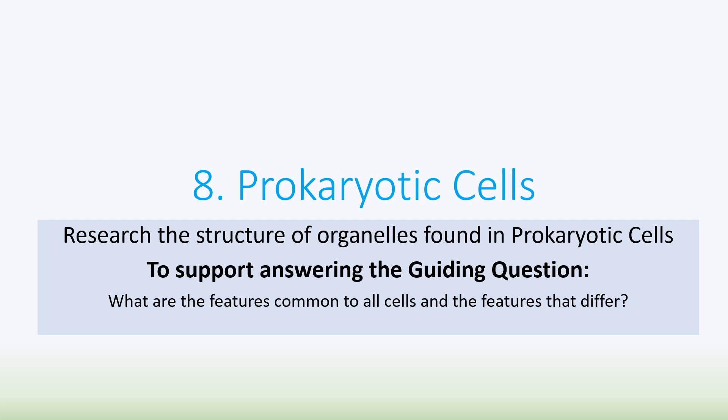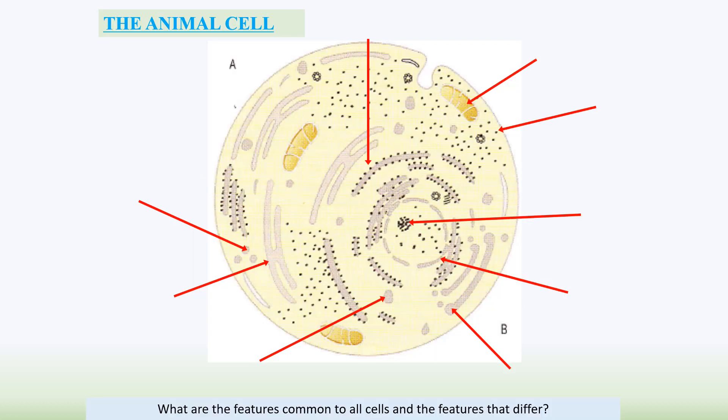You should be able to name all the different parts of an animal cell — animal cells being one of the three eukaryotic cell types: animals, plants, and fungal cells. I'd suggest you pause the video here, make sure you can identify the names of these different parts, and then I'll give the answers in a second.